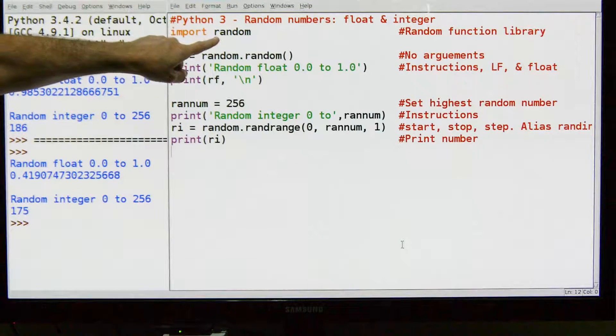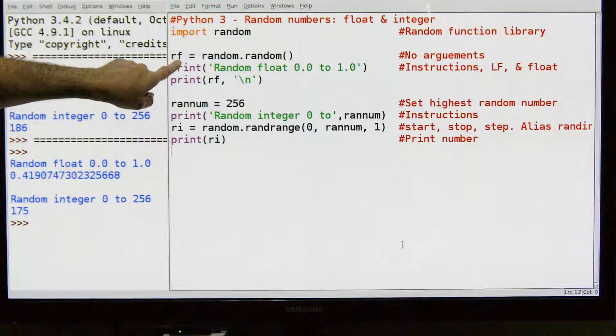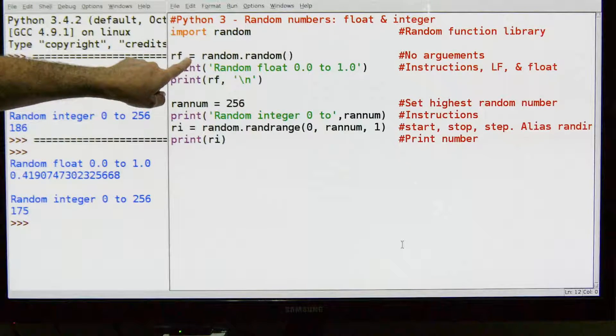The first thing we need to do is import the random function library. So we call that. Then we need to get our random float, and that's quite simple.